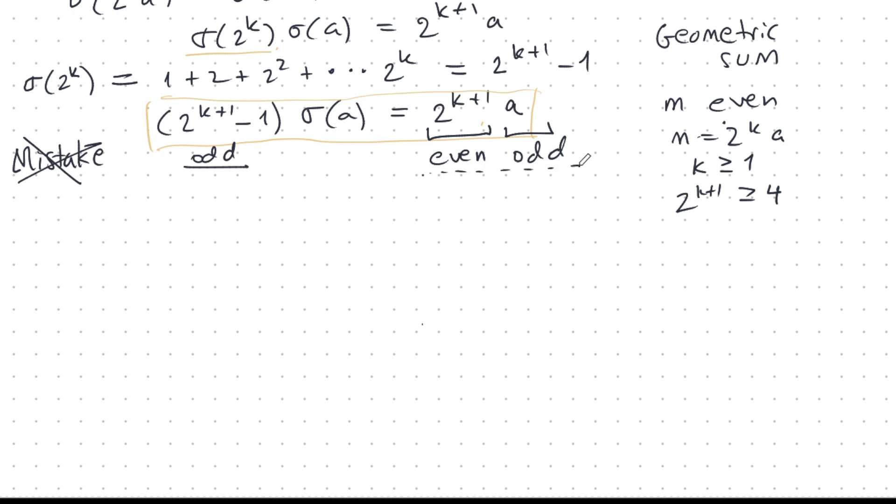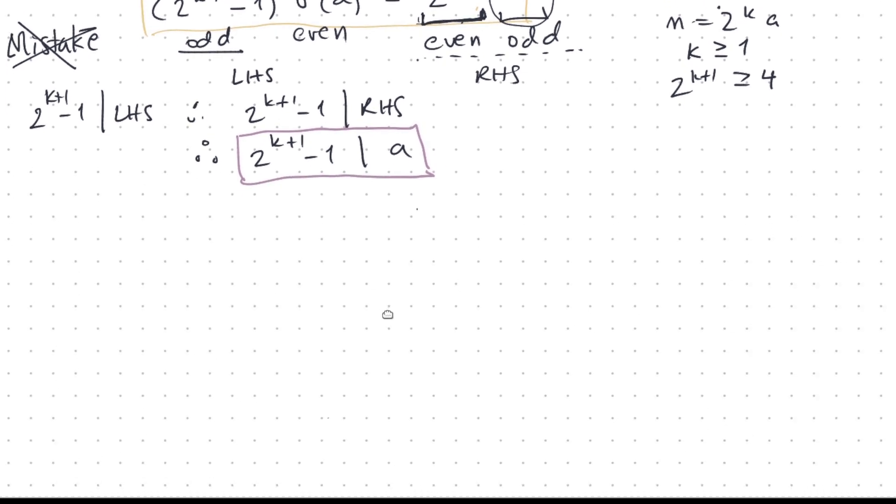If this is even, the right-hand side, then this has to be even. Simple as that. So sigma a is even. And if that's the case, let's think about this. So this is the left-hand side, and this is the right-hand side. If that's the case, well, 2 power k plus 1 minus 1 divides the left-hand side. And therefore, 2 power k plus 1 minus 1 divides the right-hand side. But this is just powers of 2. It's even. There's no odd component factor in this at all. So it must be that 2 power k plus 1 minus 1 divides a. And this is like the critical thing that Euler saw. So with this, we're able to prove what we need to prove.